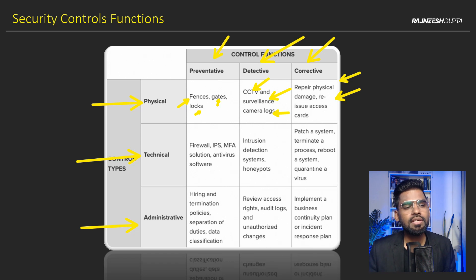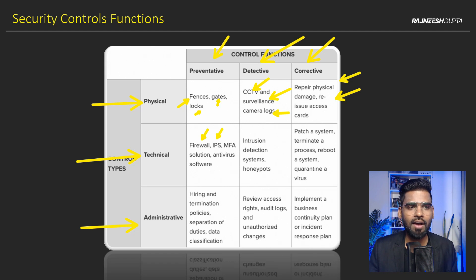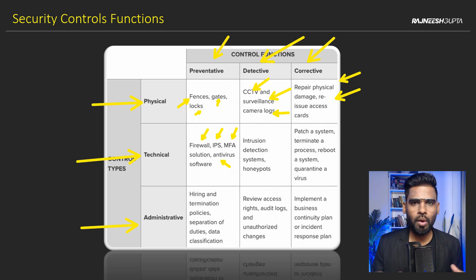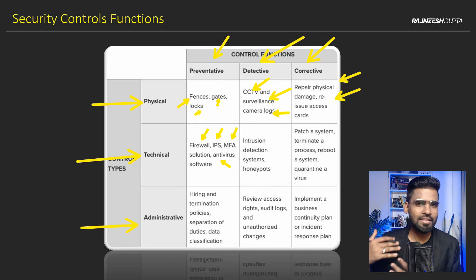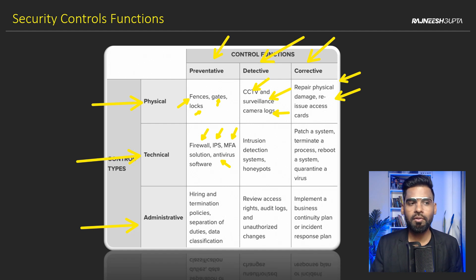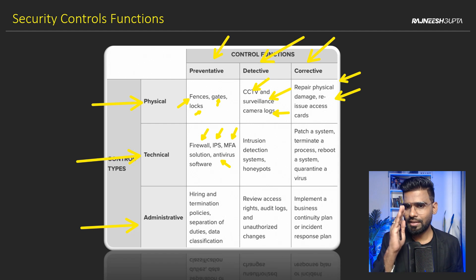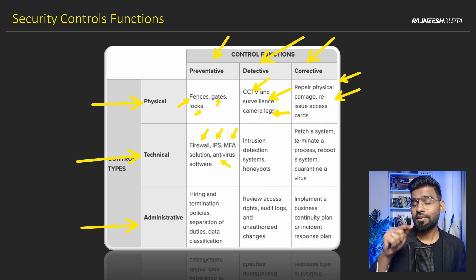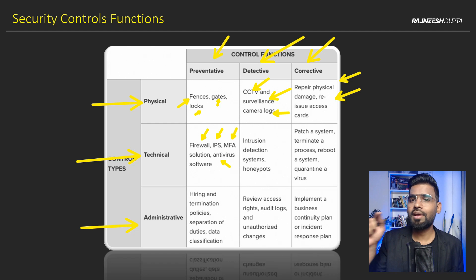Next, in technical controls, the preventive control functions include firewall, IPS, multi-factor authentication, and antivirus solutions. These are preventive because they allow the software to stop threats from getting installed on your machine. When you talk about the firewall, it has a set of rules — it takes your source IP address, destination IP address, and certain ports. If the traffic doesn't fall under any of those rules, it will be denied by default. So that's preventive.